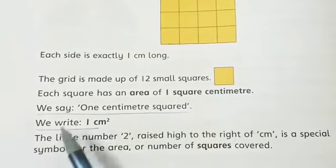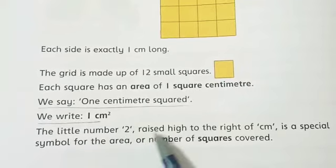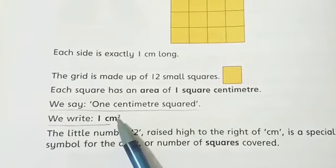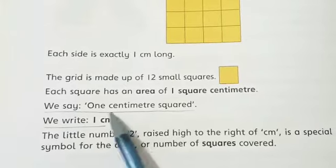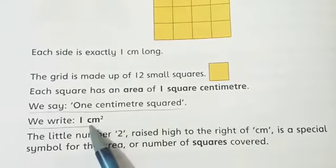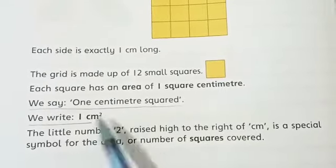How do we write about area? We write one centimeter and square above - the little number 2 raised high to the right of the centimeter is a special symbol for the area or number of squares covered.